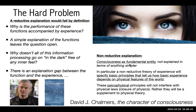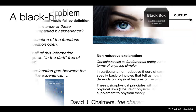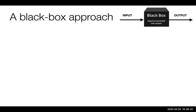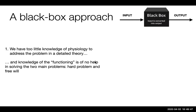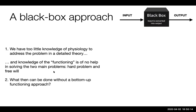I'm using a black box approach, which is crucial for me because we have too little knowledge of physiology to address the problem in a detailed theory. We have to solve other problems first. Knowledge of functioning is also of no help in solving the hard problem and free will — we can know everything about the biology and physiology of the body and still not understand anything. So what can be done without a bottom-up functioning approach?